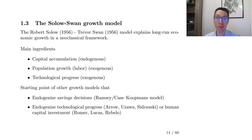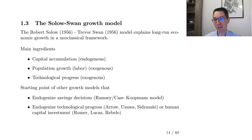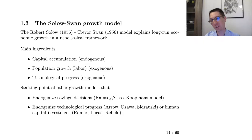The Solow-Swan model is the backbone of growth theory and the starting point of many more complete growth models. For instance, the Ramsey-Cass-Koopmans model makes the savings decision endogenous. The Arrow-Uzawa and Romer models make technological progress endogenous. Paul Romer also made human capital investment endogenous, and he received the Nobel Prize in 2018 for this work.